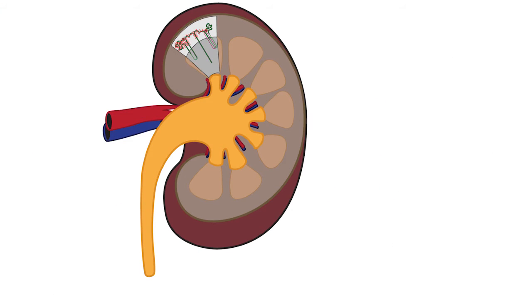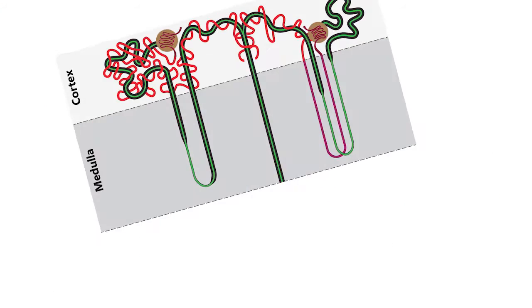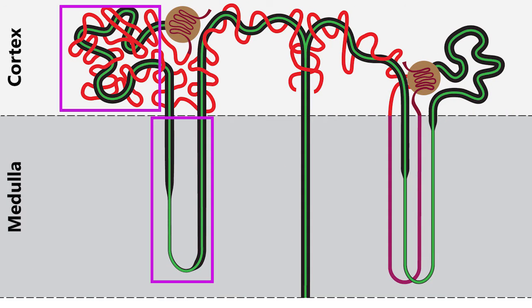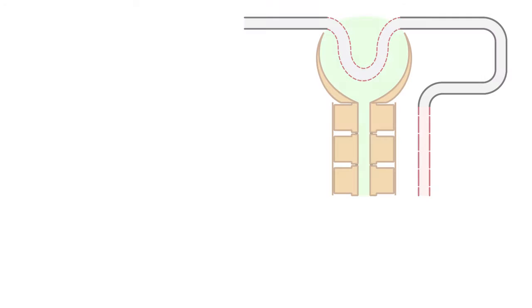So let's start this lesson by focusing on the part of the kidney involved in filtration, reabsorption, and excretion. Here we see our typical schematic of the nephron with the afferent arteriole, glomerular capillaries, efferent arteriole, peritubular capillaries, and nephron segment.